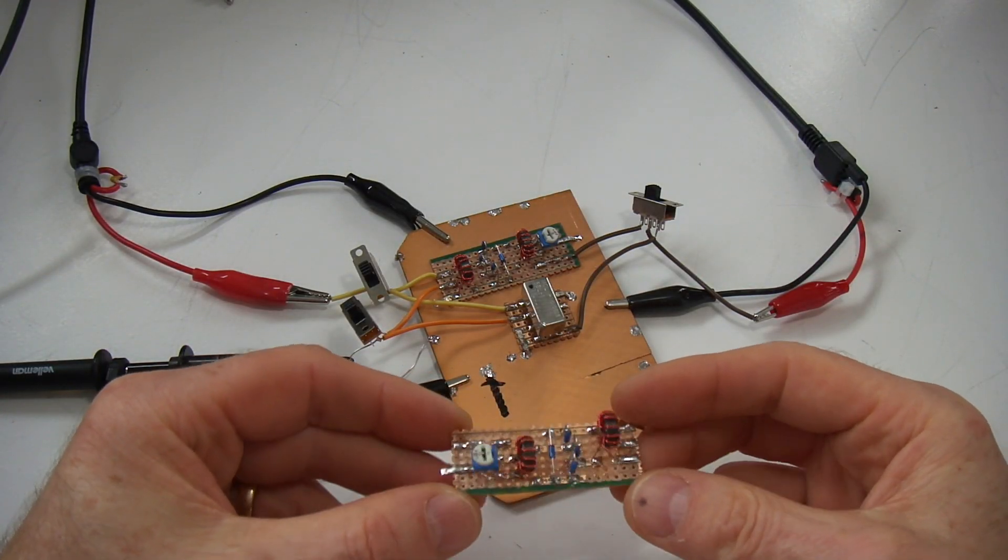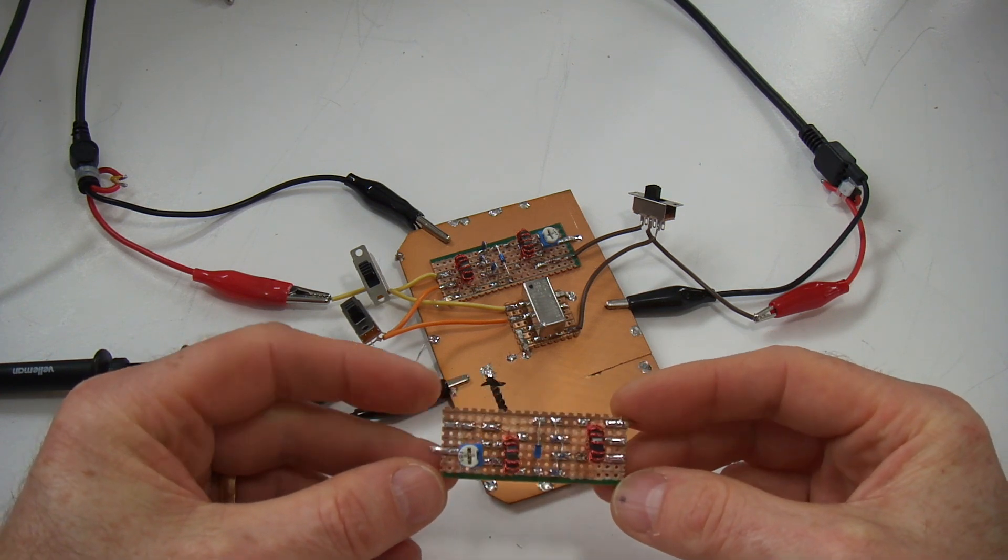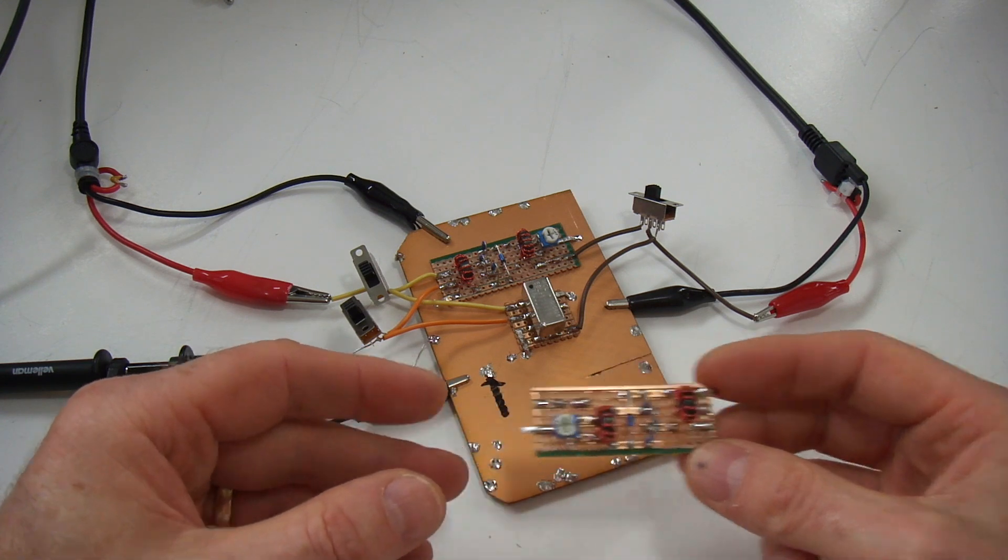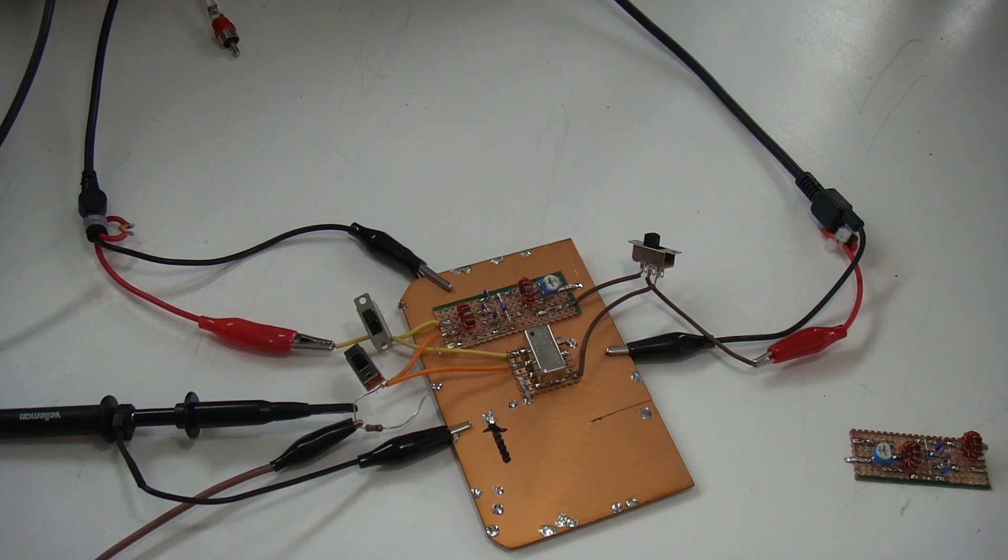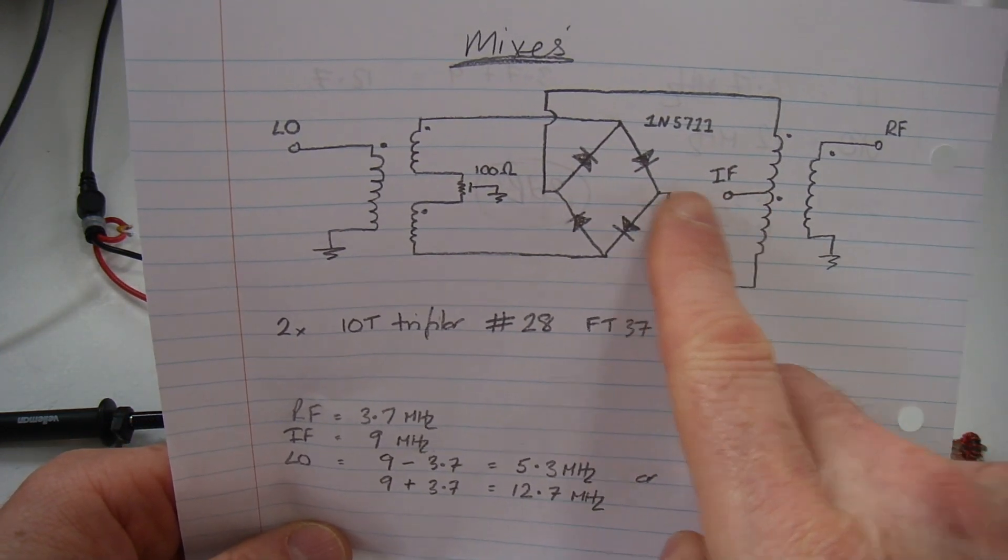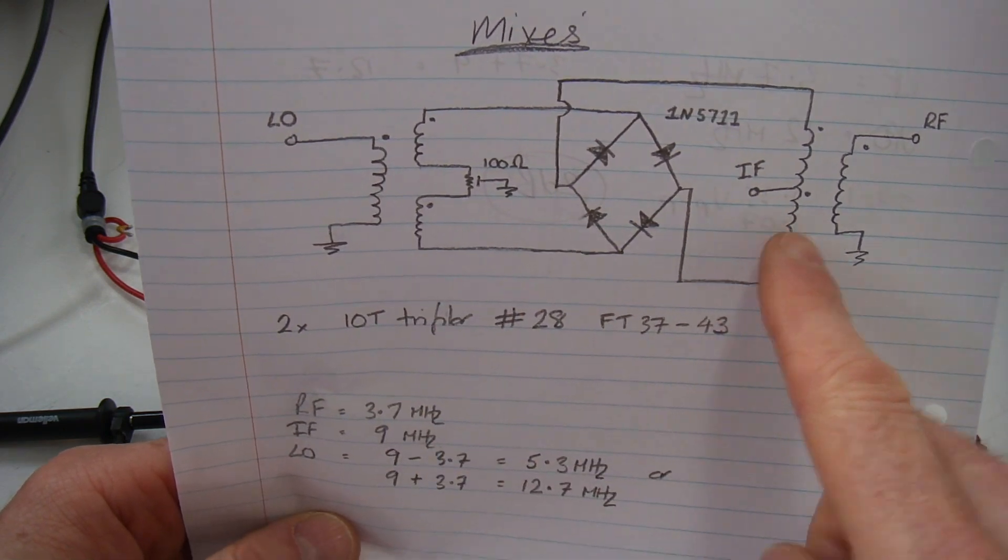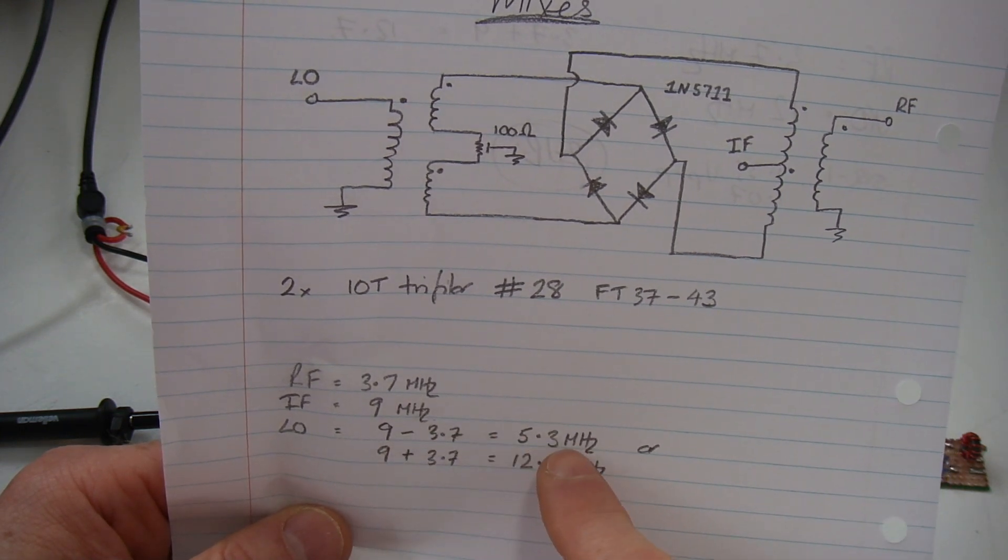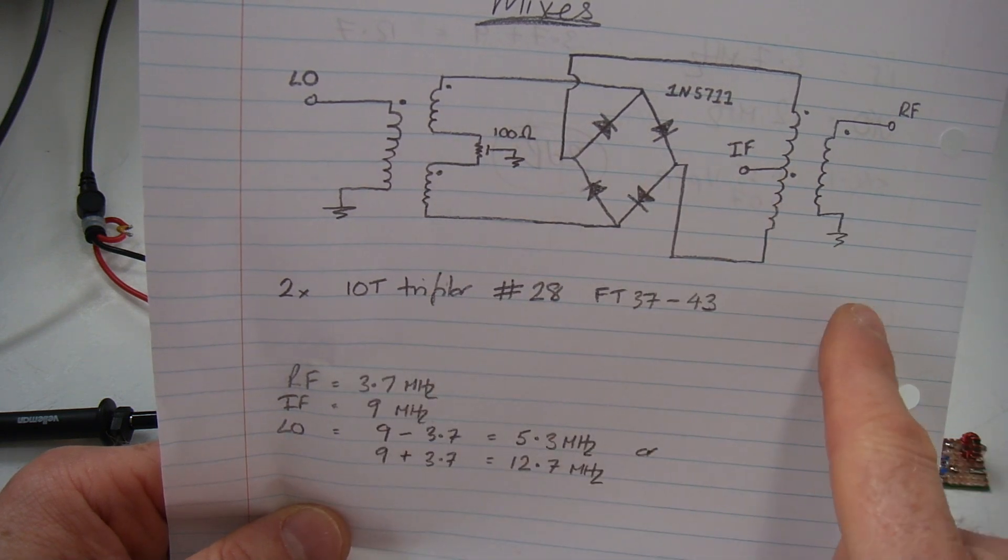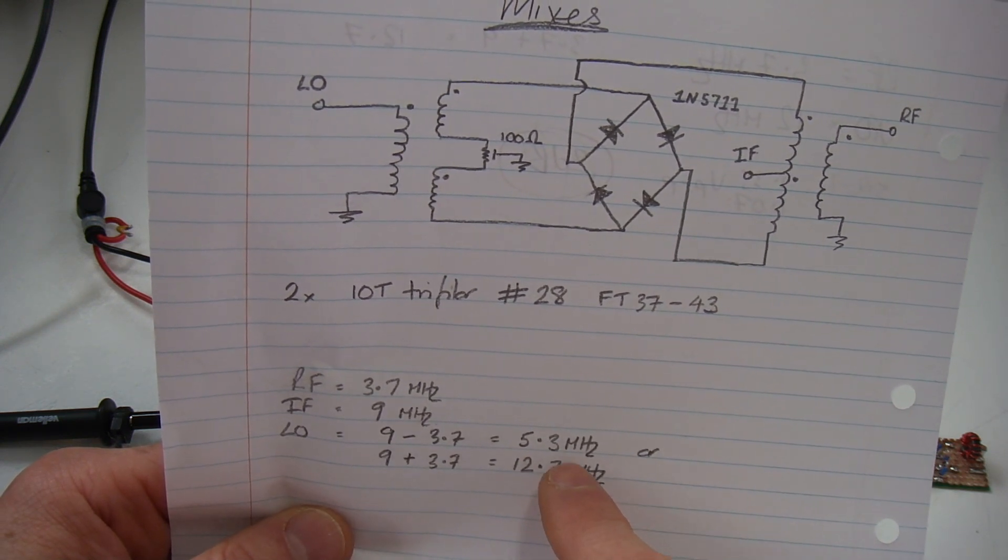Okay we're back again. Through the magic of video editing I've made up the two mixers using those two sets of four matched diodes. In terms of the frequencies, I've got an IF on this radio going to be nine megahertz, so I need to mix my incoming RF of 3.7 megs with a local oscillator to produce that IF. The local oscillator can either be on the low side at 5.3 megahertz - so 5.3 plus 3.7 equals 9 - or it can be on the high side at 12.7 megahertz - so 9 plus 3.7 equals 12.7.